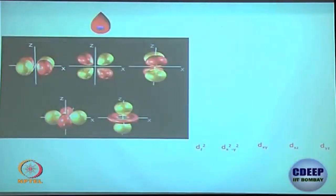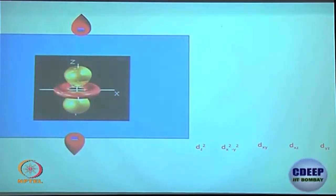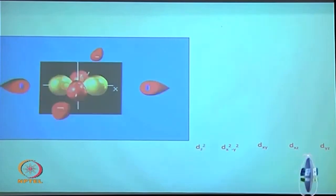As shown in the last class, these are the d-orbitals and the ligand electrons are coming to overlap with them. First, we discuss the d_z² interaction with the ligand: the ligand electrons come in and repel the d electrons, so d_z² is destabilized since it faces the ligand directly.